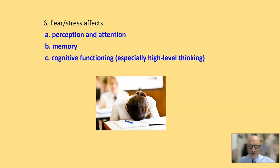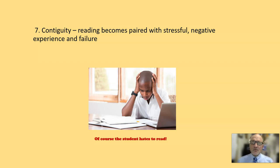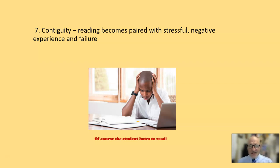It impacts our frontal lobes. Remember, the blood is being shunted away from that, just to the core parts so we can run or fight — cognitive functioning, especially high-level functioning. In a reading program, contiguity means one thing becomes paired with another. When reading becomes paired with a stressful, negative experience, when it becomes paired with failure, students are less apt to do it. And we want students to naturally be motivated to read — that's an important part of a reading program.